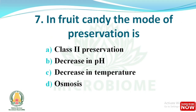Next question: in fruit candy, the mode of preservation is which of the following? The options are class 2 preservation, decrease in pH, decrease in temperature, and osmosis. The right answer is option D: osmosis.